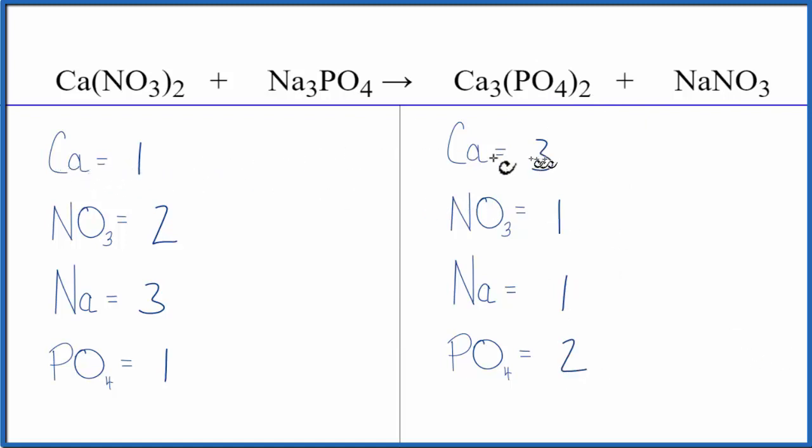Let's just start by balancing the calcium, because we could put a three in front of the calcium nitrate. One times three, that would give us three of those. So the calciums would be balanced. And then for the nitrates, we have two times the one. So we have two of these times three. That'll give us six nitrates.